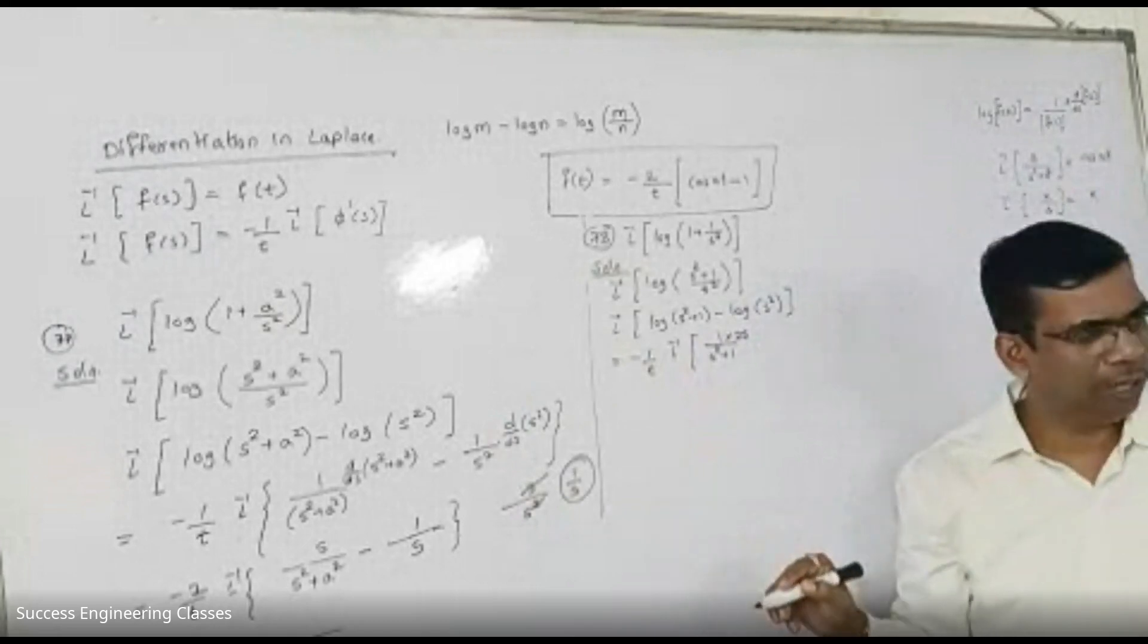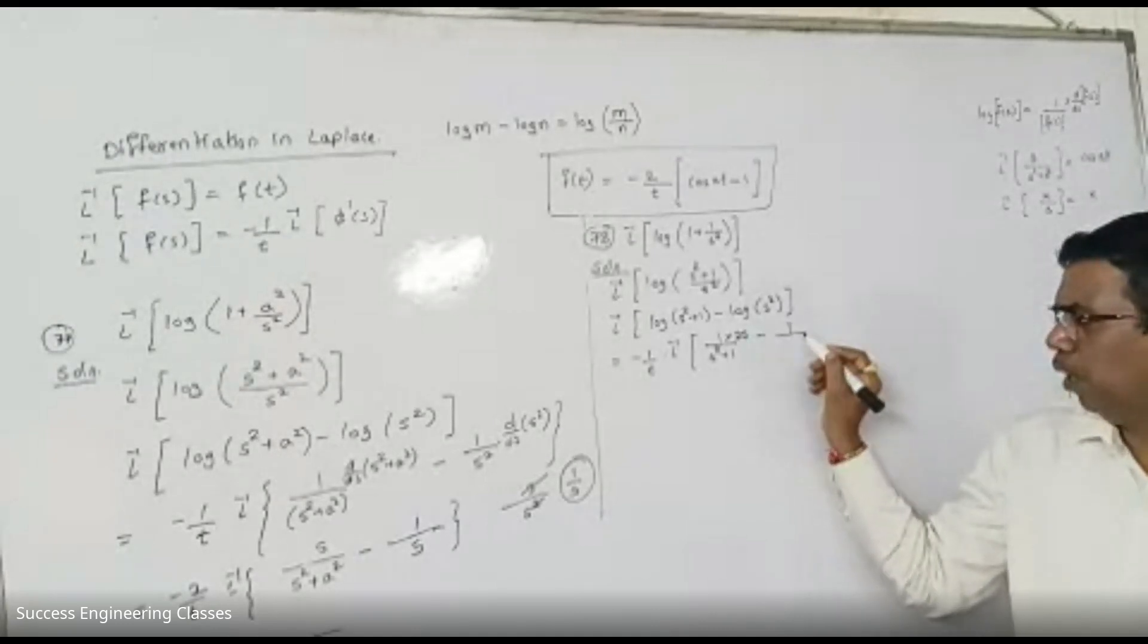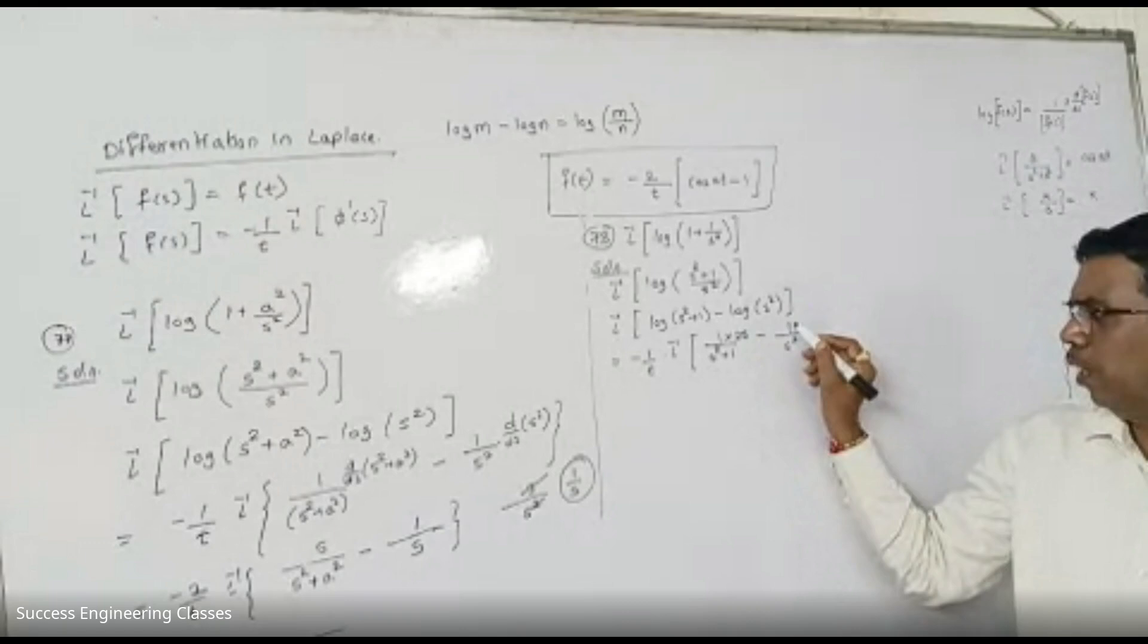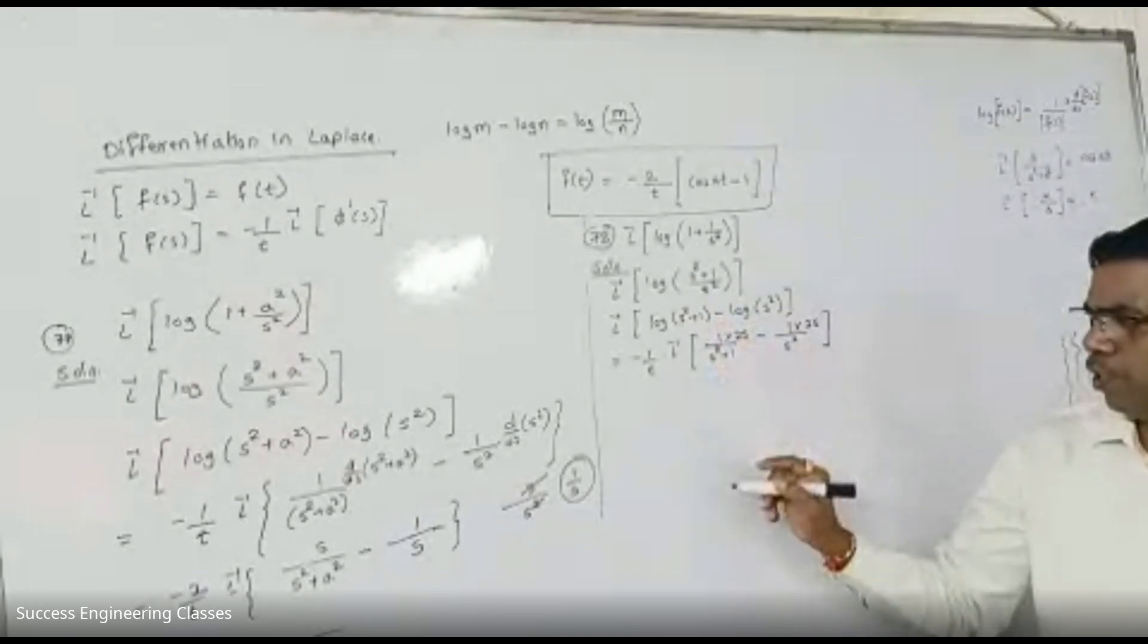It is not necessary. And then, minus log of A square. 1 upon A square into derivative of A square is 2S. 1 derivative is 0.